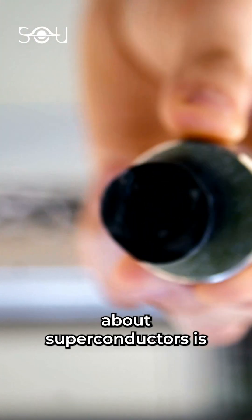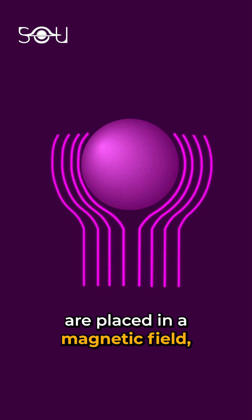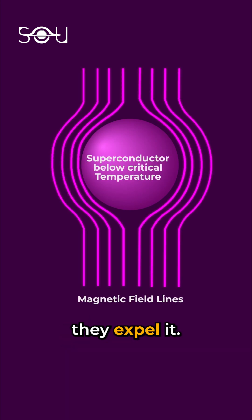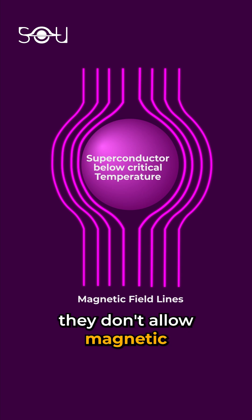An interesting thing about superconductors is that when they are placed in a magnetic field, they expel it. Unlike regular metallic conductors, they don't allow magnetic field lines to pass through them.